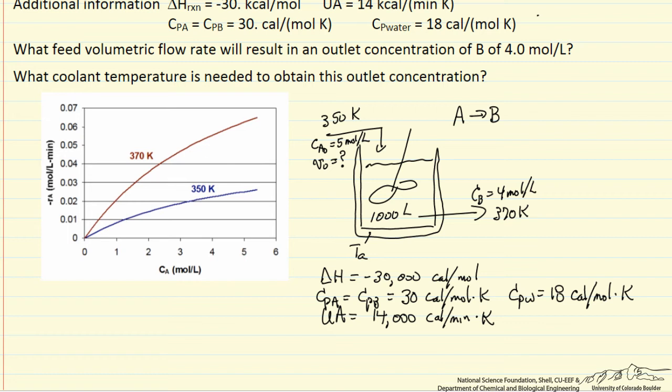The concentration of B leaving is 4, which means the concentration of A is 1 mole per liter, and of course this is also the concentration in the reactor. And the unknowns are the temperature of the coolant and the volumetric flow rate.